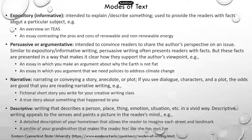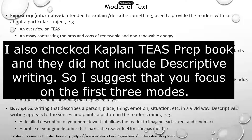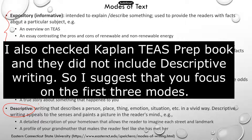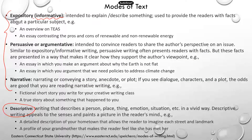I listed the four modes of text required by TEAS. Now in the TEAS study manual, there's really not a very clear description on the descriptive type of passage. First, expository: the writer tries to explain something. It's also known as informative. It's used to provide the readers with a fact or explanation of why something happens. For example, why lightning happens, and why do you see the lightning before you hear the thunder?